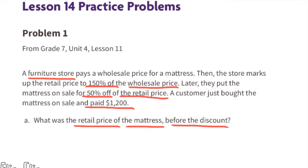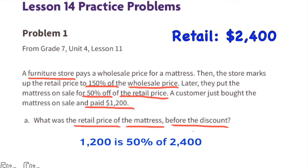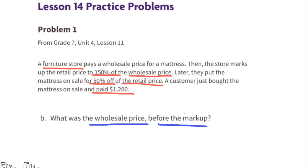Part a: What was the retail price of the mattress before the discount? The customer paid $1,200 for the mattress and they got it for 50% off the retail price. $1,200 is 50% of $2,400, so the retail price was $2,400.